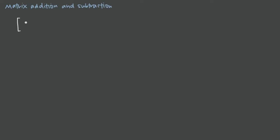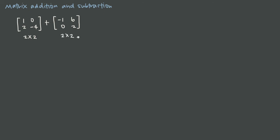So for instance let's come up with a 2 by 2 matrix. Let's say we have 1, 0, 2, and negative 4, and we want to add that to another matrix. Because this matrix is 2 by 2, I can only add it to another 2 by 2 matrix. I can't add this to a 2 by 3 or a 4 by 2 or a 1 by 1 or any dimensions other than 2 by 2. But let's say I do have another 2 by 2 matrix: negative 1, 6, 0, and 2. This matrix addition is defined because both matrices are 2 by 2.